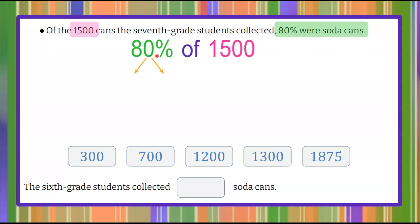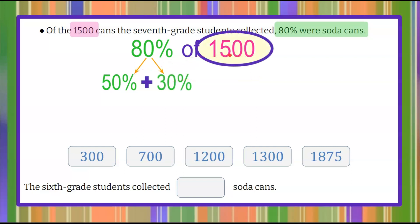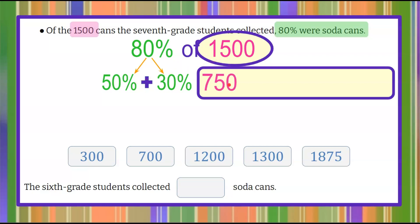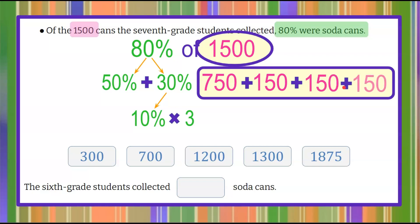Same thing — we're going to break 80% into simpler parts: 50% plus 30%. We're finding 50% of 1,500, and then 30% of 1,500 for 80%. Half of 1,500 is 750. Now let's break 30% into an easier amount — that's 10% times 3, three 10%s. 10% of 1,500 is 150, since we just move the decimal point one space to the left. We're going to add that three times. Now we just need to add these all up: 750 plus 150 is 900, 900 plus 150 is 1,050, and 1,050 plus 150 is 1,200 soda cans.